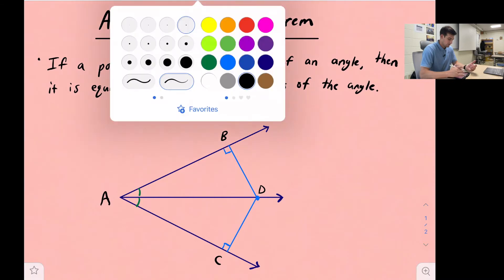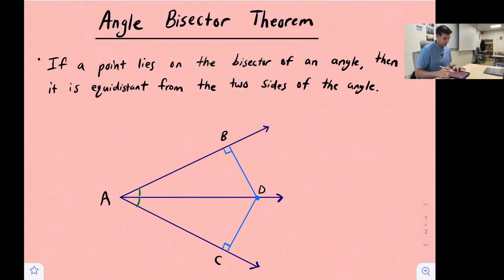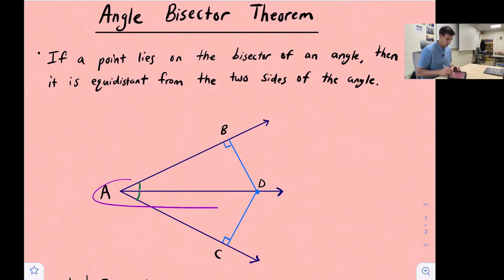If we take a look at our diagram down here, we see that our angle bisector would be line AD or ray AD. One thing about an angle bisector is it's going to bisect this angle into two congruent angles, so that's what we see right there.